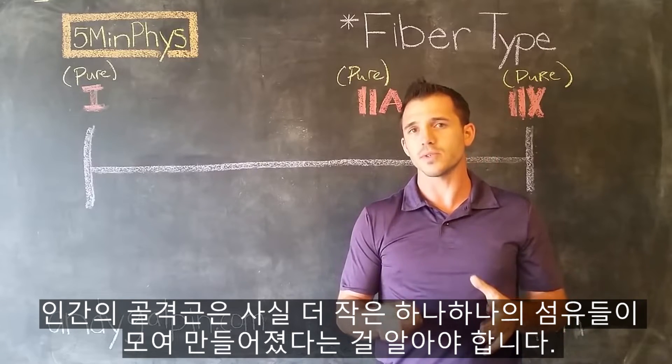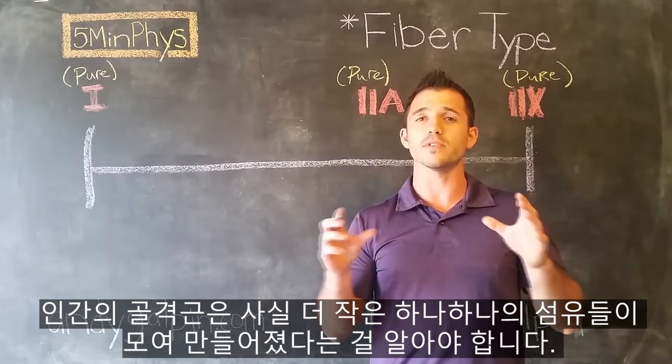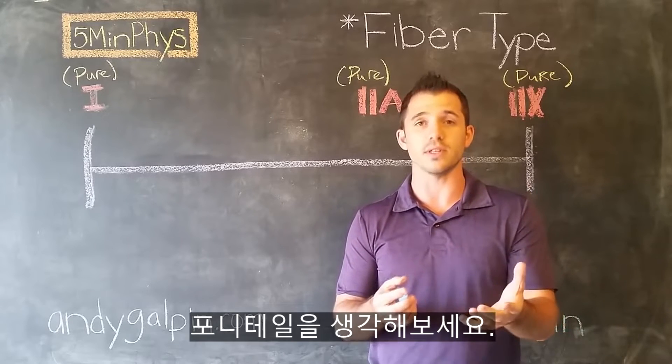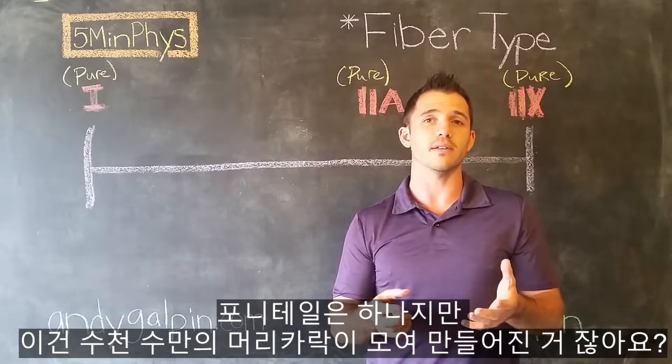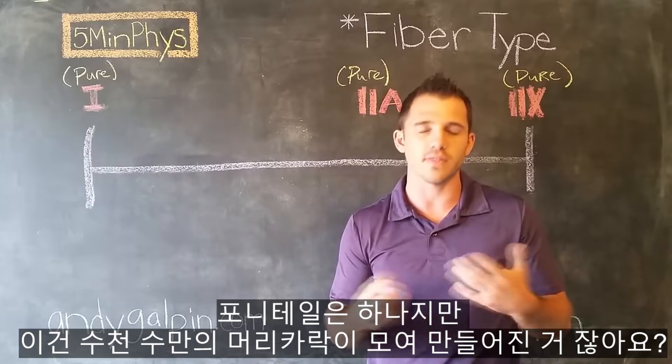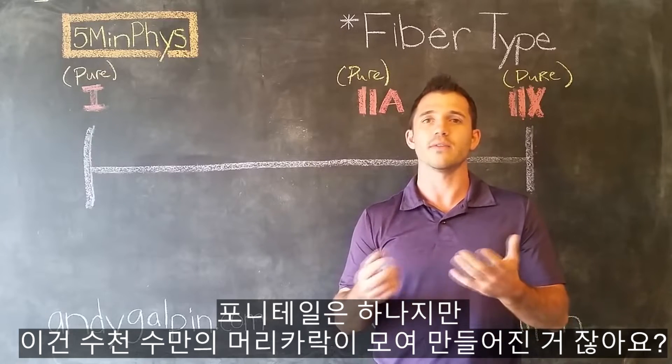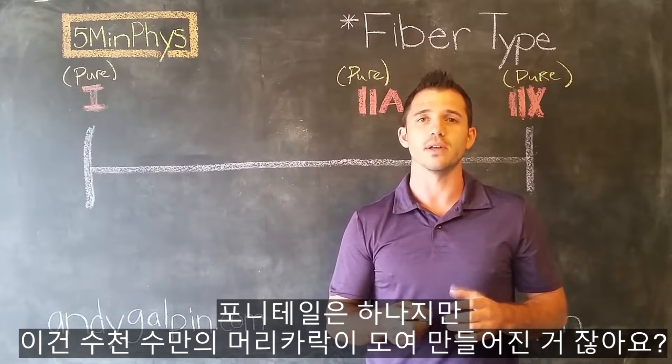Think about like a ponytail. So you have one ponytail, but that's actually made up of hundreds if not thousands of individual muscle fibers, or in the ponytail example, individual hairs.